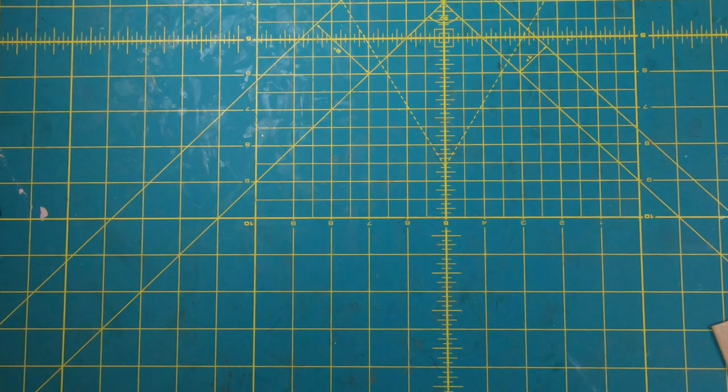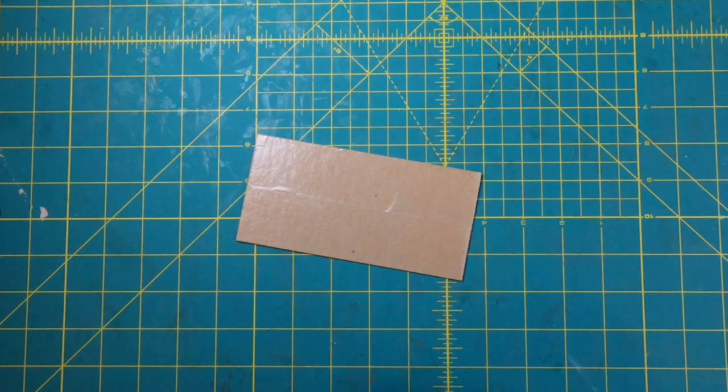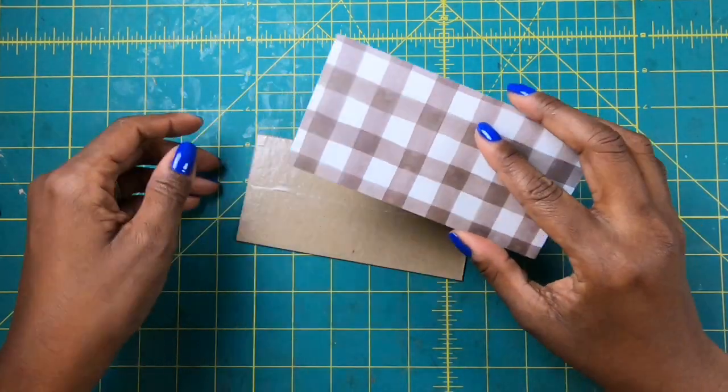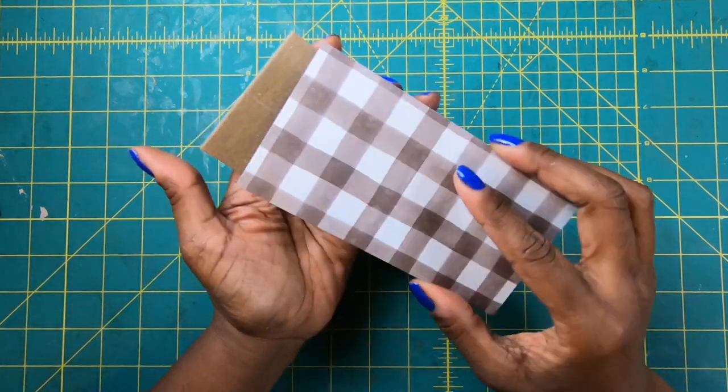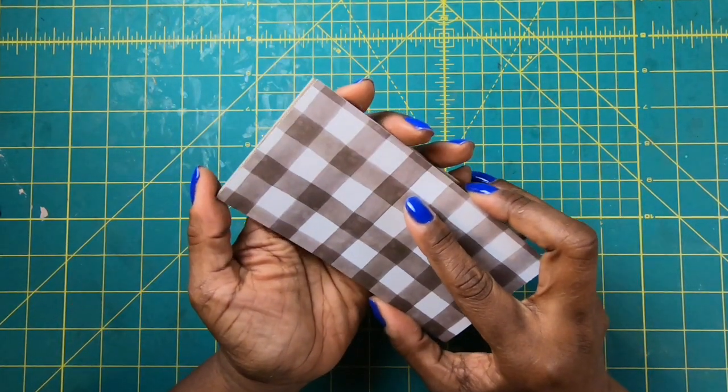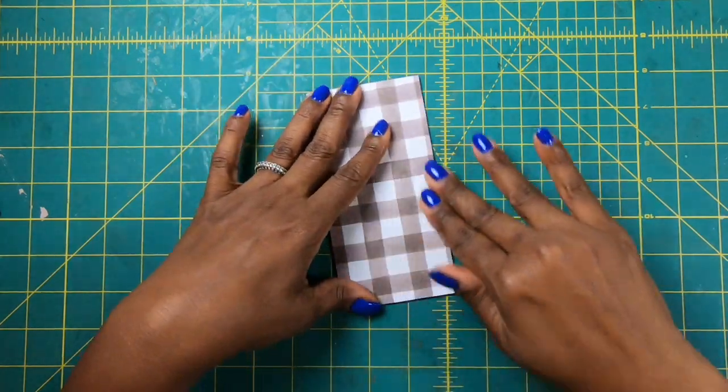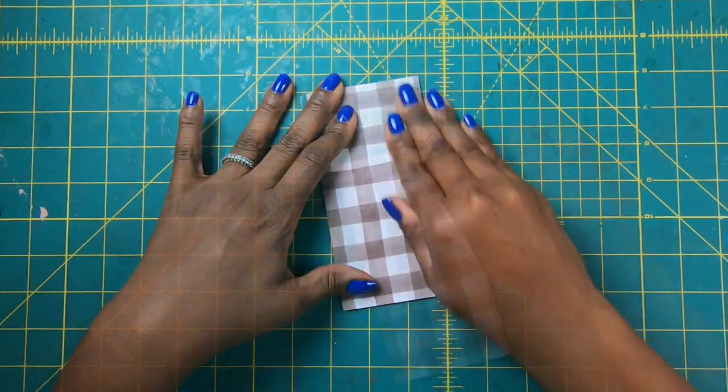So we're going to start with a piece of chipboard that measures three by six. I have a piece of my coordinating paper that also measures three by six. I'm going to pick this up and get this stuck down, and then I have this cute little flower from my cream of flower collection.